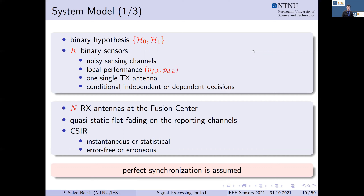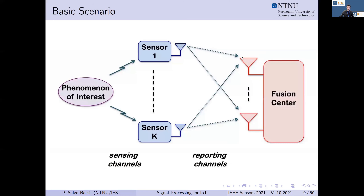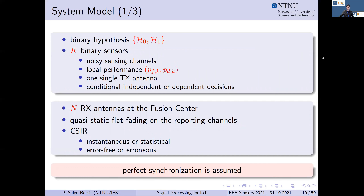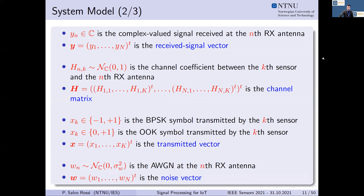We assume quasi-static flat fading on the reporting channels with channel state information at the receiver, focusing on both instantaneous and statistical channel state information. Perfect synchronization is assumed throughout. The received signal Y is a complex-valued signal at the receive antennas, H is the channel coefficient matrix, and the binary information transmitted by sensors uses either BPSK symbols (minus one, plus one) or on-off keying (zero, plus one). Standard additive white Gaussian noise is assumed at each receive antenna.